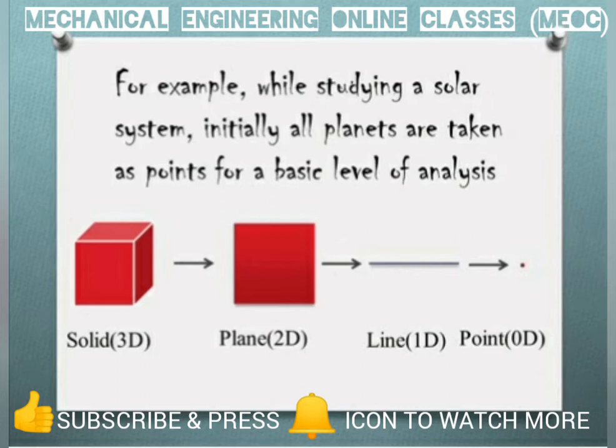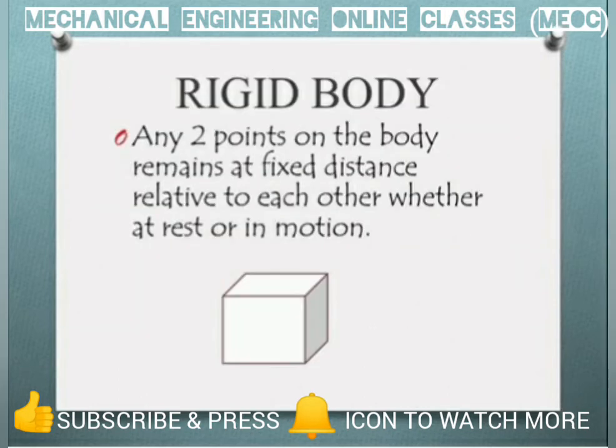A point is taken as an example for a particle. Now, coming to rigid body — a rigid body is said to be rigid when it is not deforming under any circumstance.